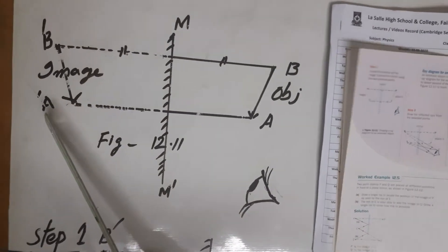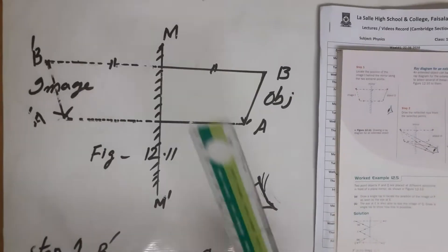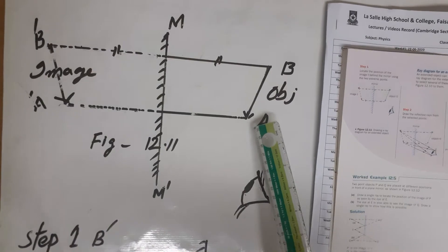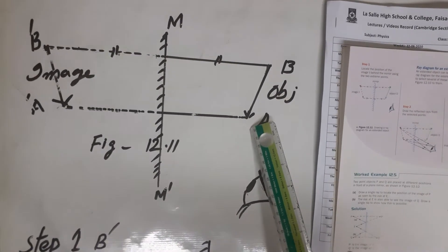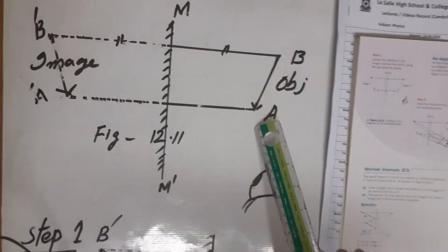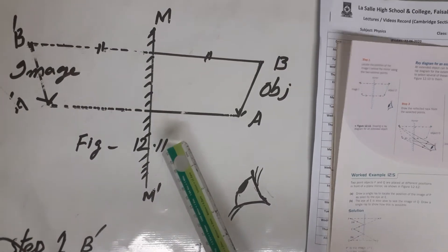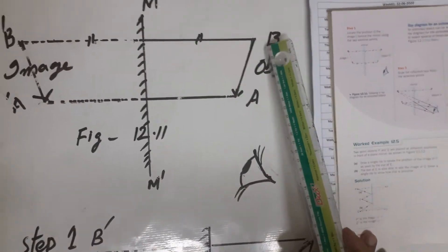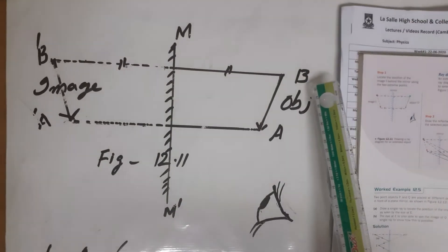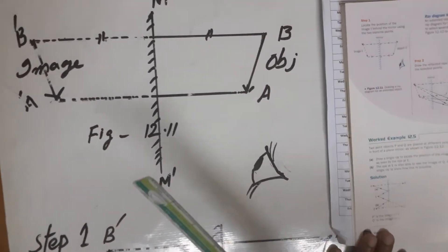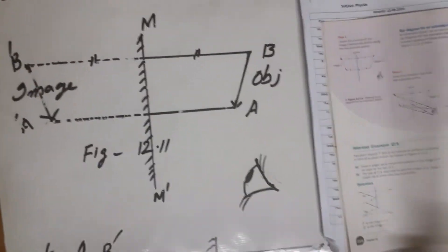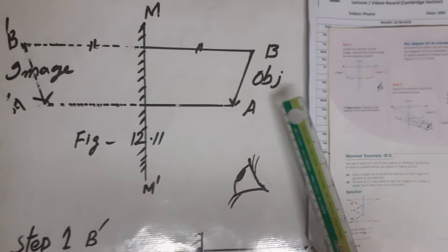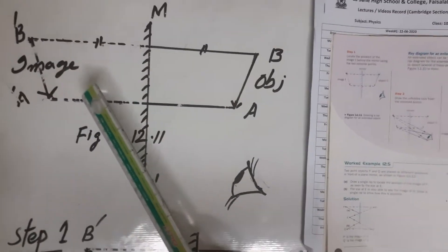Behind the mirror it is A dash and B dash. This one is the head of object and image, and this is the toe of object and image. We will learn how this image is formed.